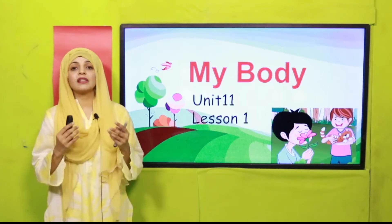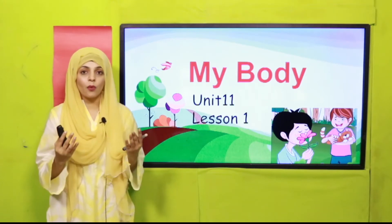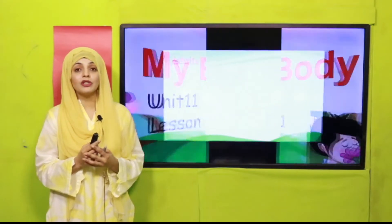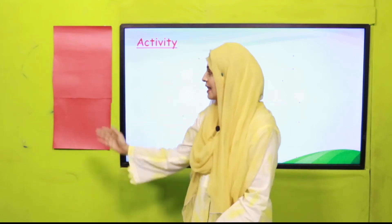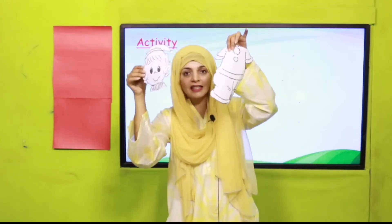Today we will start Unit 11, Lesson 1, and for that we will do an activity — you're really going to enjoy it. We will play a game. You can see there is an empty chart paper here, and what we are going to do is paste cutouts of body parts on it. The teacher can make this activity in the classroom; even parents can make it at home. You just need a chart paper and a few cutouts from a picture, then ask your child to paste them.